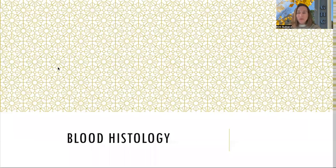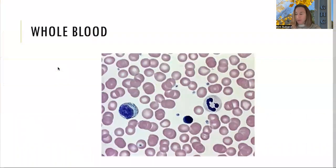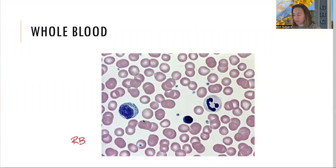In this video we are going to talk about blood physiology — what is in the blood, all the different things in there. We start off with a slide of all the formed elements in the blood. We've got red blood cells, also called erythrocytes.